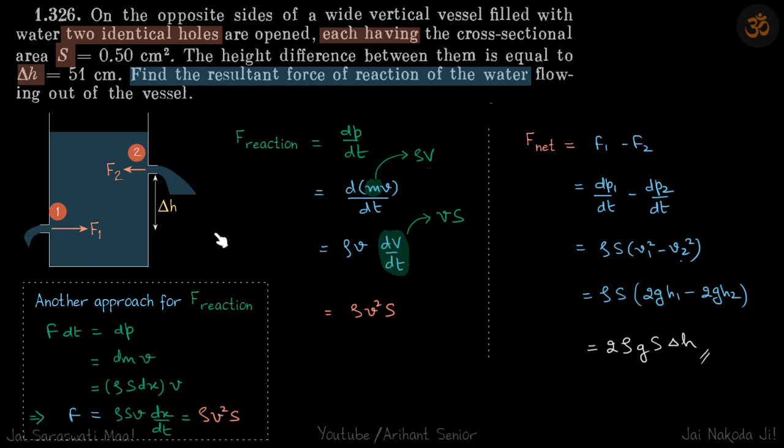Let's say in DT time, so impulse will be FDT, and we know impulse is change of momentum, that is DP. Now velocity of this liquid finally is V and initially it was zero, so DP I can write as DM into V. This becomes DM into V. Now you can see in DT time how much mass has come out.